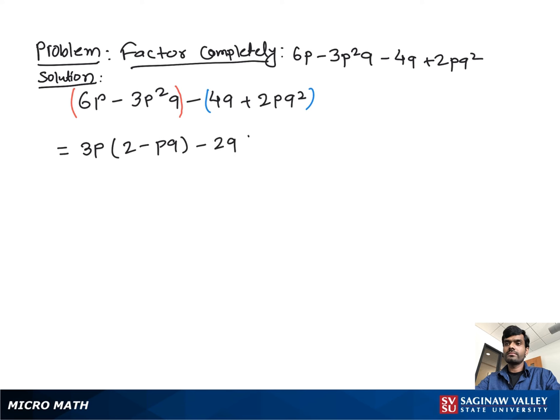From the second grouping, we take out negative 2q as a common factor, then we have left 2 minus pq.